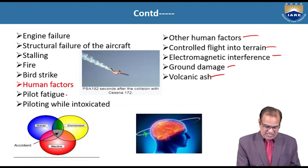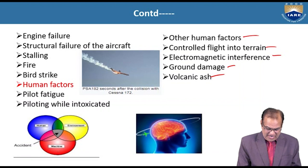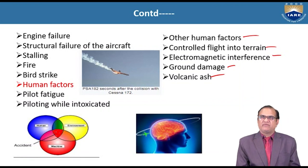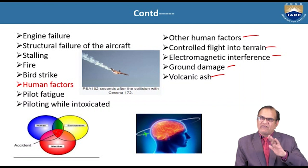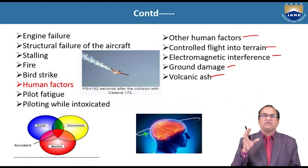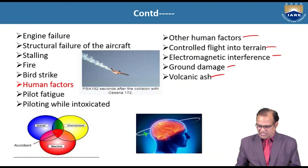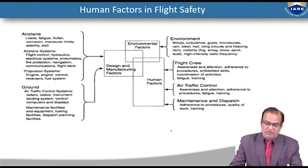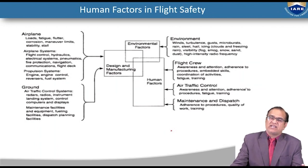Accidents occur where human factors, environment, and the machine all intersect — this is the accident zone where all three are matching. Human factors are very important because humans are involved everywhere. Your mind should be very peaceful while working on the aircraft, flying, working on the ground, or as ATC — wherever you are in the airfield, your mind should be peaceful, not in tension or distress.